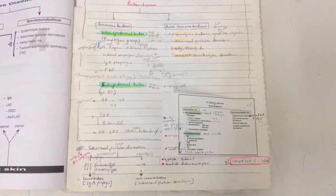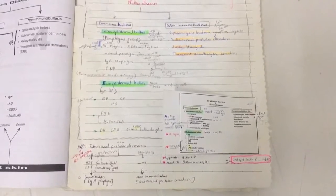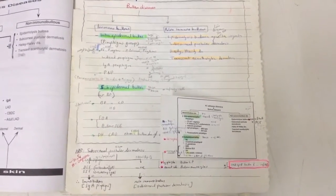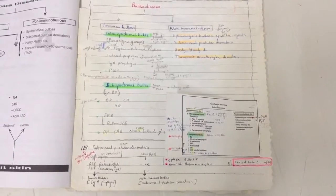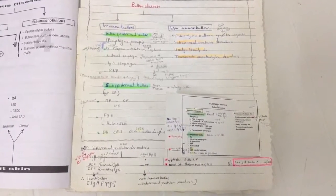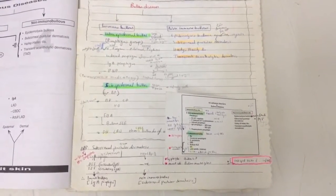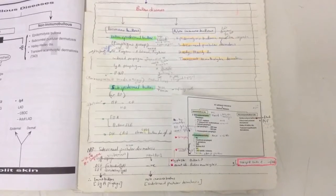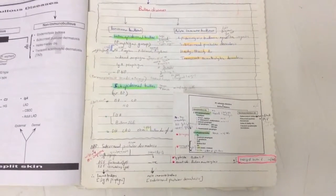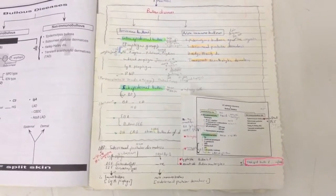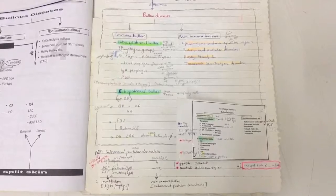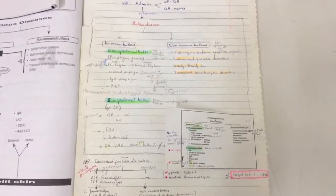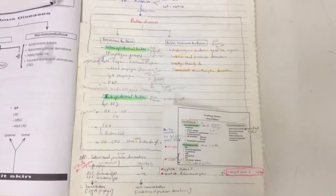Intra-epidermal bullae include the pemphigus group: pemphigus vulgaris, vegetans, foliaceous, and erythematosus, induced pemphigus, IgA pemphigus, and paraneoplastic pemphigus. The sub-epidermal bullae include the bullous pemphigoid group: bullous pemphigoid, cicatricial pemphigoid, herpes gestationis, epidermolysis bullosa acquisita, bullous systemic lupus, dermatitis herpetiformis, and chronic bullous disease of childhood.